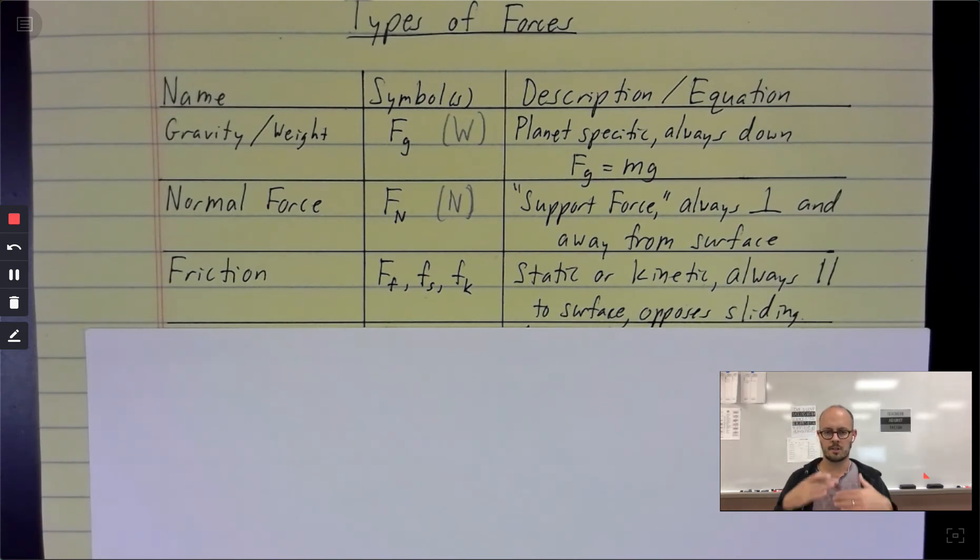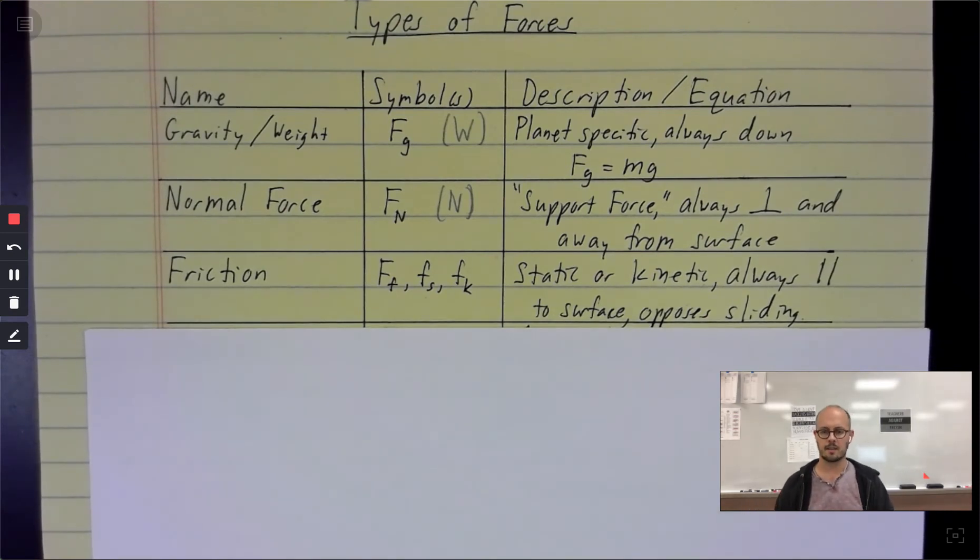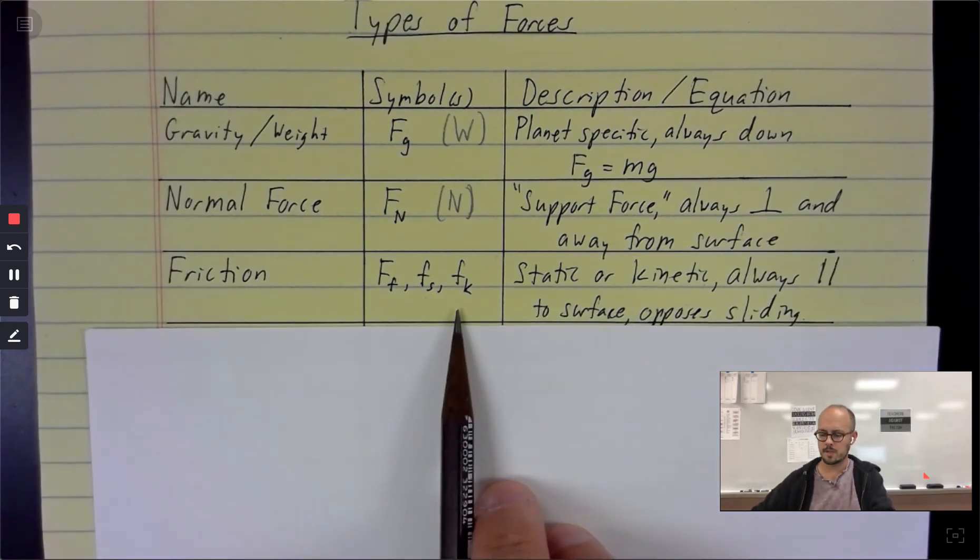So static friction is for things that are stuck together, whereas kinetic friction is for things that are sliding relative to one another. So the most common example would be if you push hard enough on your bed, it will start to slide around your room and you are now being opposed by that force of kinetic friction.